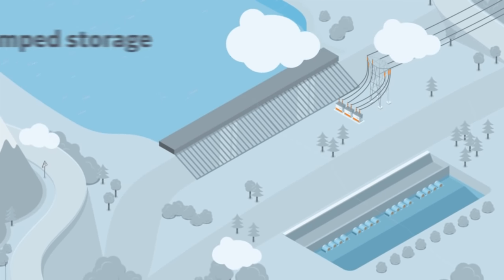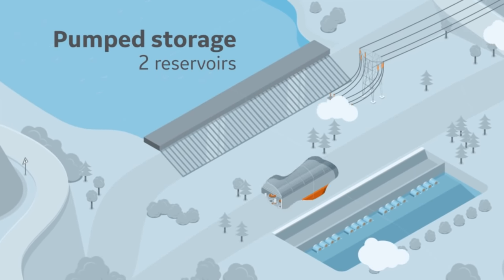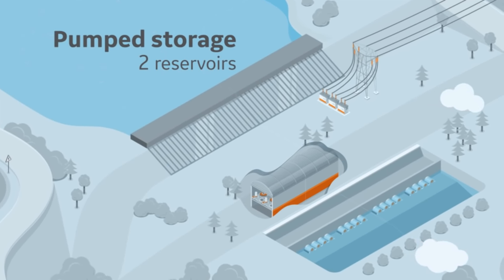Pumped storage hydroelectric plants require two reservoirs located at two different elevations. They're linked by conduits and the plant is generally underground.